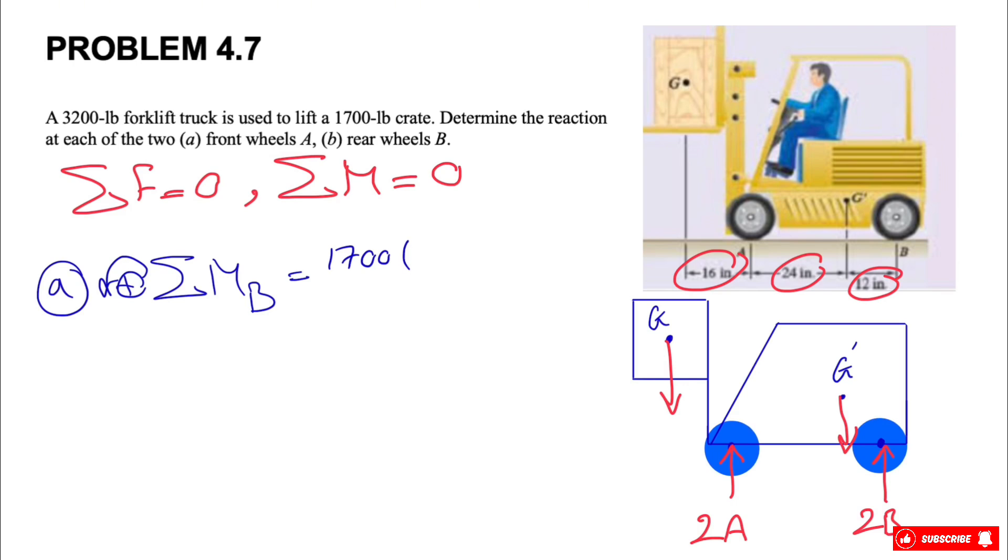So as we can see, the moment of the weight is going to make a counterclockwise moment, so it will be a positive moment. We have the weight of the crate, which is 1700 pounds, and the distance would be this distance, which is 16 plus 24 plus 12, which will be 52 inches.